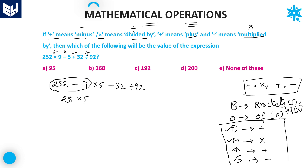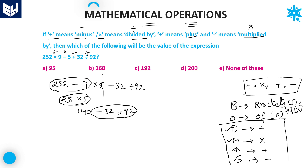Next is 28 into 5. 28 multiplied by 5 equals 140. Up to here, the value is 140. After that, minus 32 plus 92. You can do addition and subtraction simultaneously. 92 minus 32 equals 60. Then 140 plus 60 equals 200. Option D is the right answer for this question.